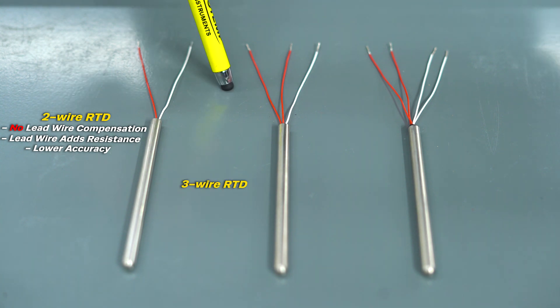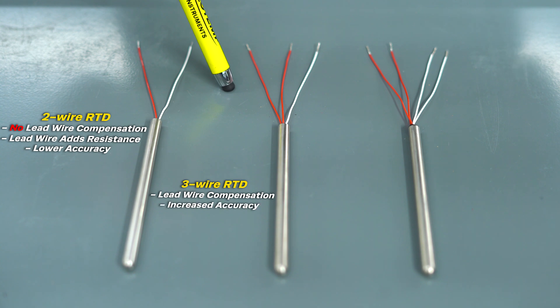A three wire RTD has a redundant lead wire on one side. This extra wire is used to measure how much resistance the wire itself is creating and then subtracts that resistance so that you're only measuring the resistance of the RTD element. This is the most common configuration for industrial applications and provides adequate compensation for lead wire resistance.